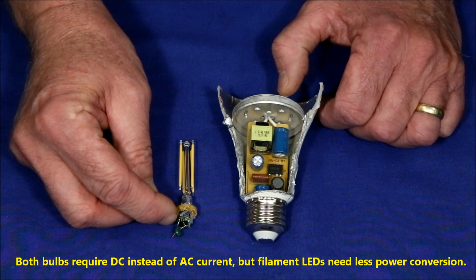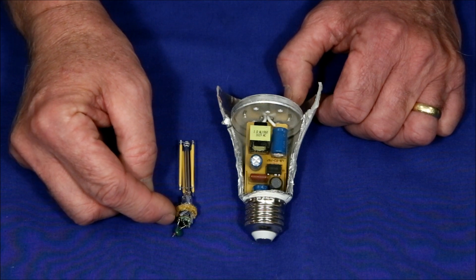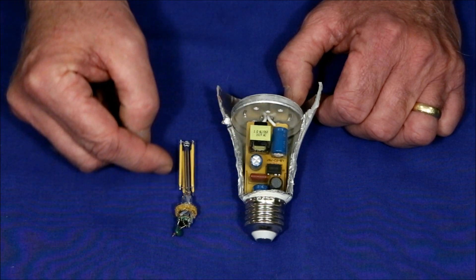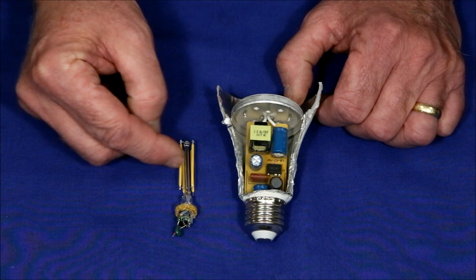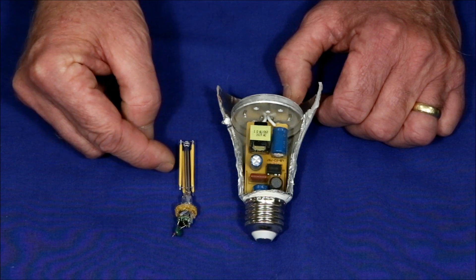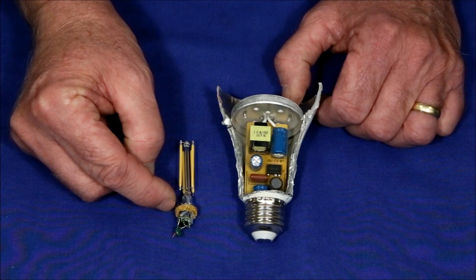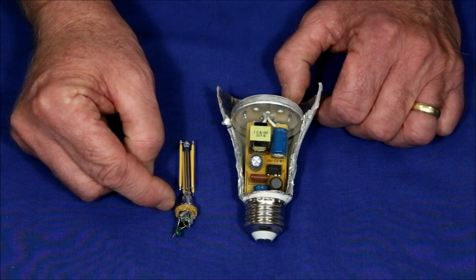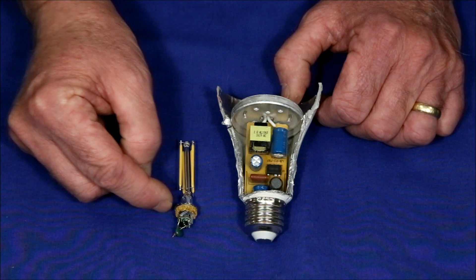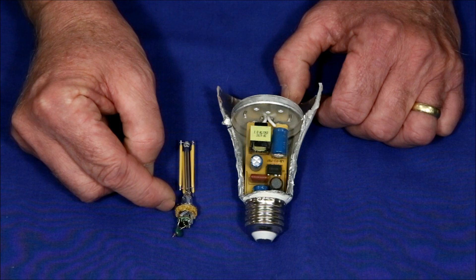Another thing is this is much more efficient than this one. This doesn't get hot or as hot as this one. And again because you don't have a diffuser you don't have diffusion losses because the light has to pass through the diffuser. So these are simpler to make, require fewer components, and are going to be more efficient. So I'm predicting that these in the future, the filament LED bulb is going to take over.